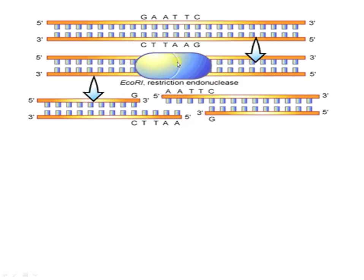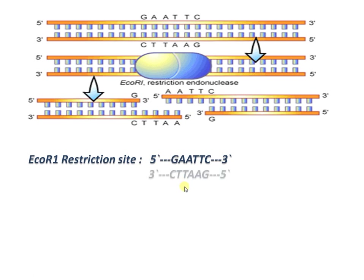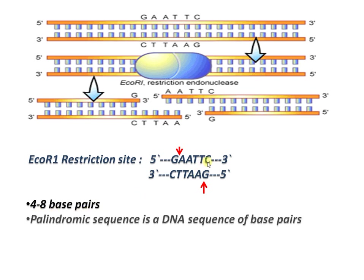The restriction site for EcoRI is GAATTC. It makes cuts after G on both strands. Regarding the recognition site, these are often five to eight base pairs long and are palindromic sequences — reading GAATTC from either direction gives the same sequence due to rotational symmetry.